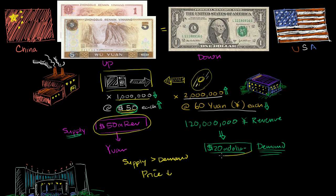And the US is exporting $20 million worth of goods to China. So clearly, there's a trade imbalance. The US is importing $50 million worth of goods and it's exporting $20 million worth of goods. So it has a $30 million trade deficit.